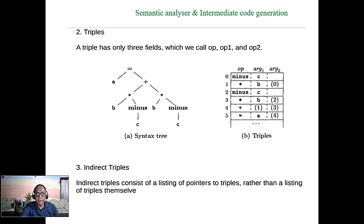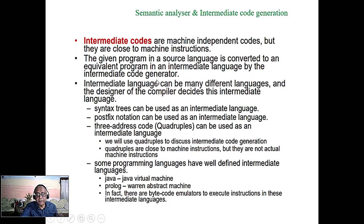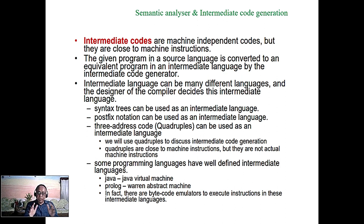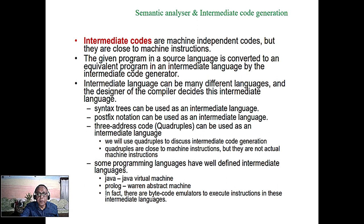Here we have the abstract syntax tree and intermediate code alongside machine-dependent code. Some virtual machines implement three address code in quadruples — operand one, operand two, result, and operation forming a quadruple. Quadruples are close to machine instructions but are not actual machine instructions; they will be converted to actual code later.